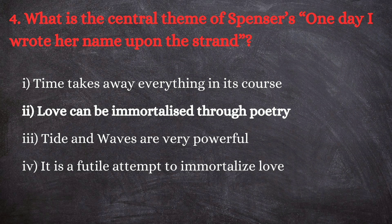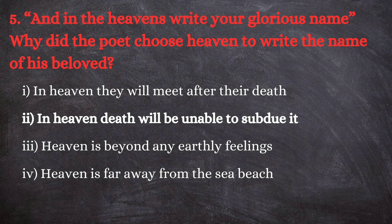Next question: 'And in the heavens write your glorious name' — why did the poet choose heaven to write the name of his beloved? The options are: first, in heaven they will meet after their death; second, in heaven death will be unable to subdue it; third, heaven is beyond any earthly feelings; and fourth, heaven is far away from the sea beach. The correct answer is the second one.